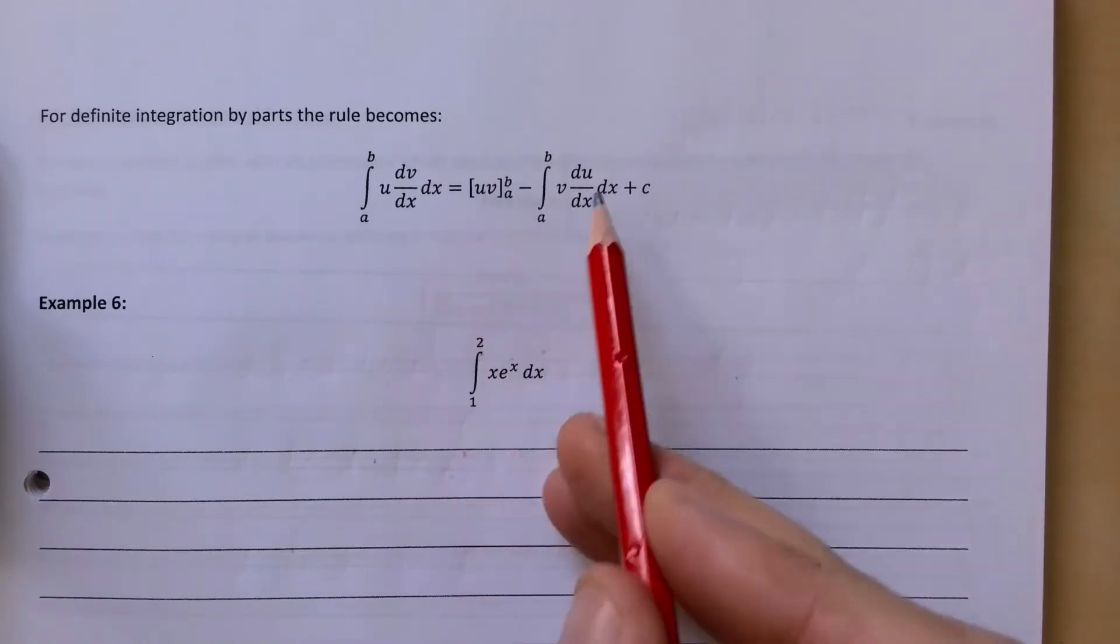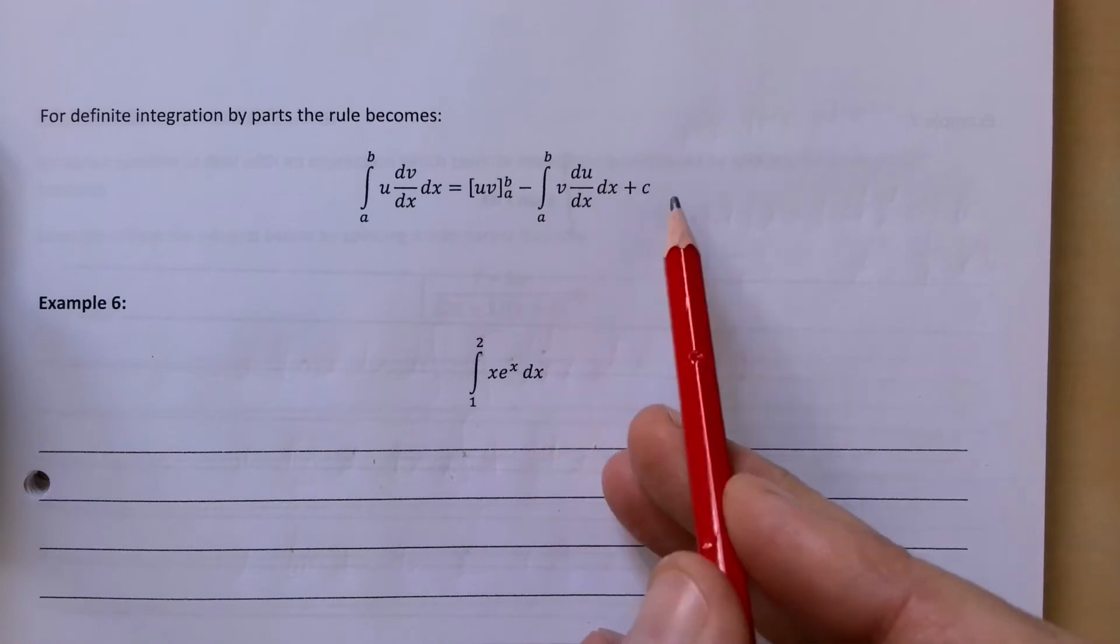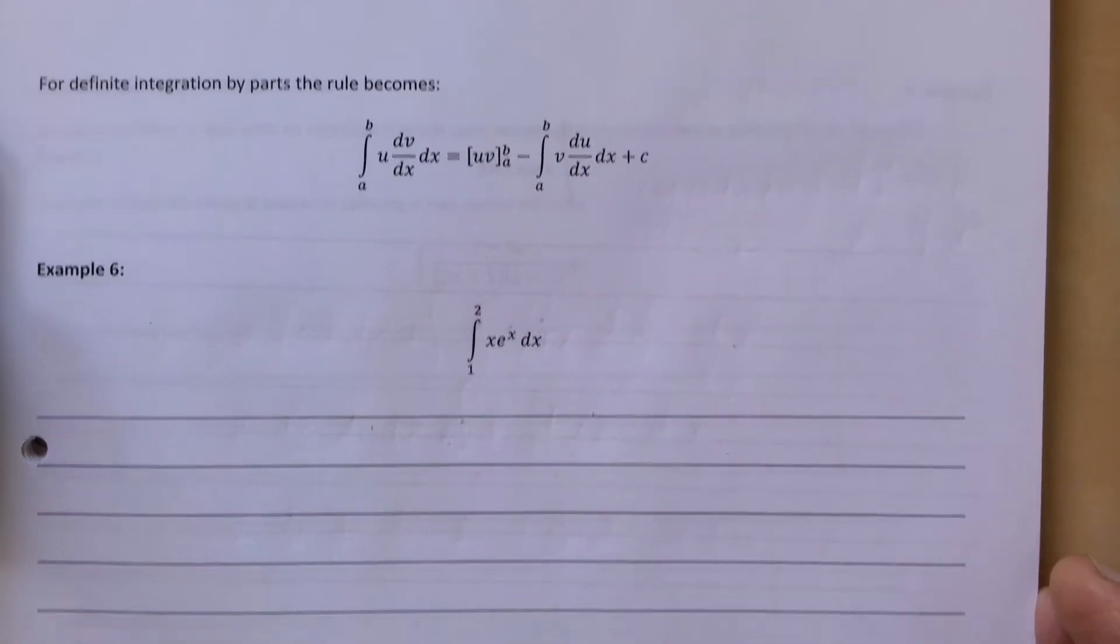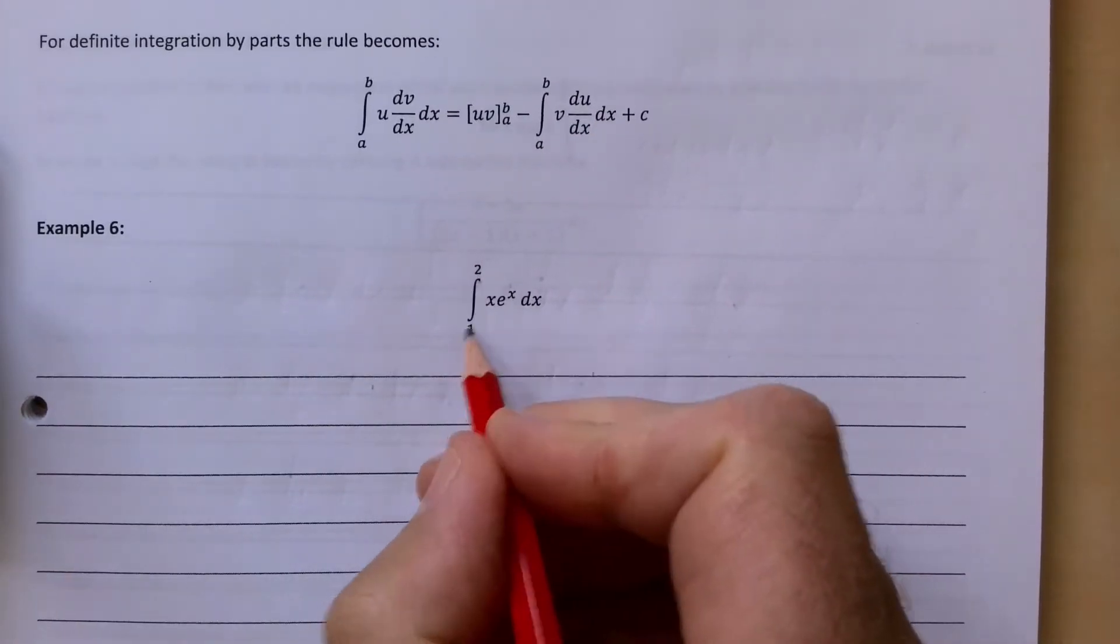It's where your square brackets are going to appear, and then your b and a will appear up here for the V du by dx. So let's look at a couple of examples and hopefully it'll make a little bit more sense. We're asked to evaluate between 2 and 1.